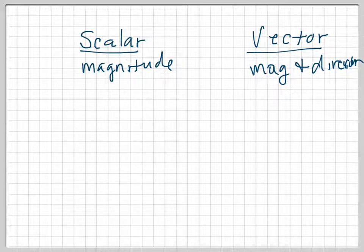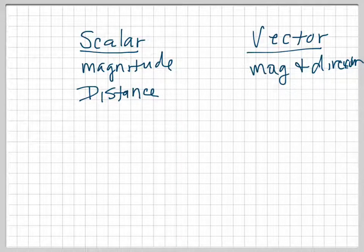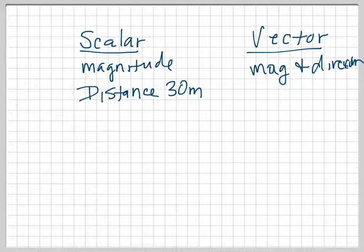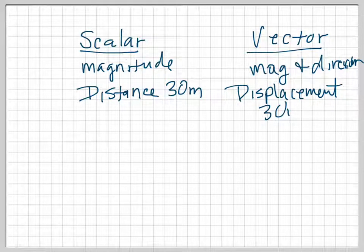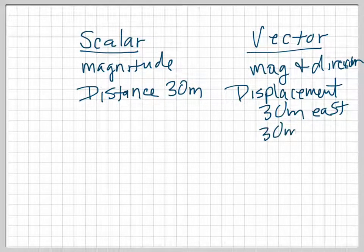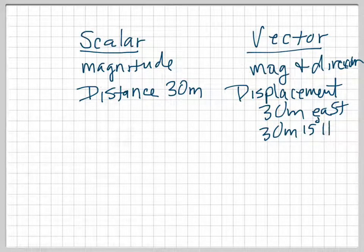There are some words we need to know the difference on. For instance, if you use the word distance — you measure a distance like maybe 30 meters — that is called a scalar quantity. But if you measure a displacement, that is a vector quantity, and that would be like 30 meters east, or you could do 30 meters at 15 degrees north of east or something like this.